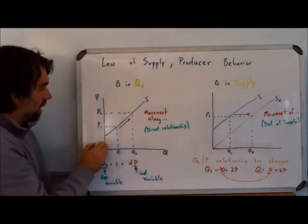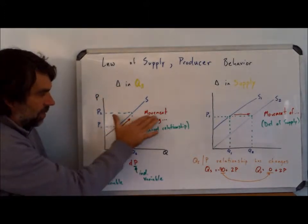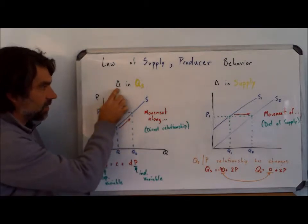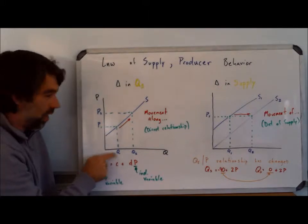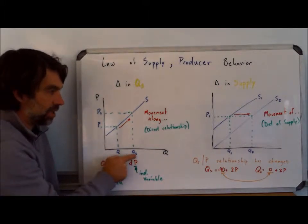Just like we saw for law of demand, when we're talking about a movement along the supply curve, it's a change in quantity supplied. So we're saying at P1, I would supply Q1, but at P2, I'll supply Q2.